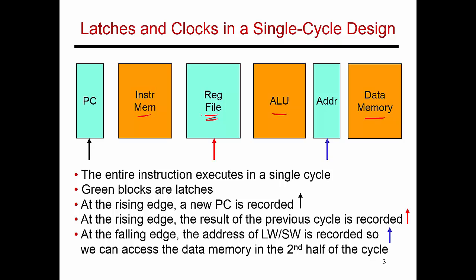If you look at which of these units need a clock, the program counter needs a clock. At every rising edge, the program counter gets updated with the next instruction that has to be executed. Once that's updated, that PC feeds as inputs to the instruction memory stage, and an instruction spills out of there. It then goes to the register file. You don't need a clock to read things out of the register file, so the register file produces the values at those locations, which feed as inputs to the ALU.